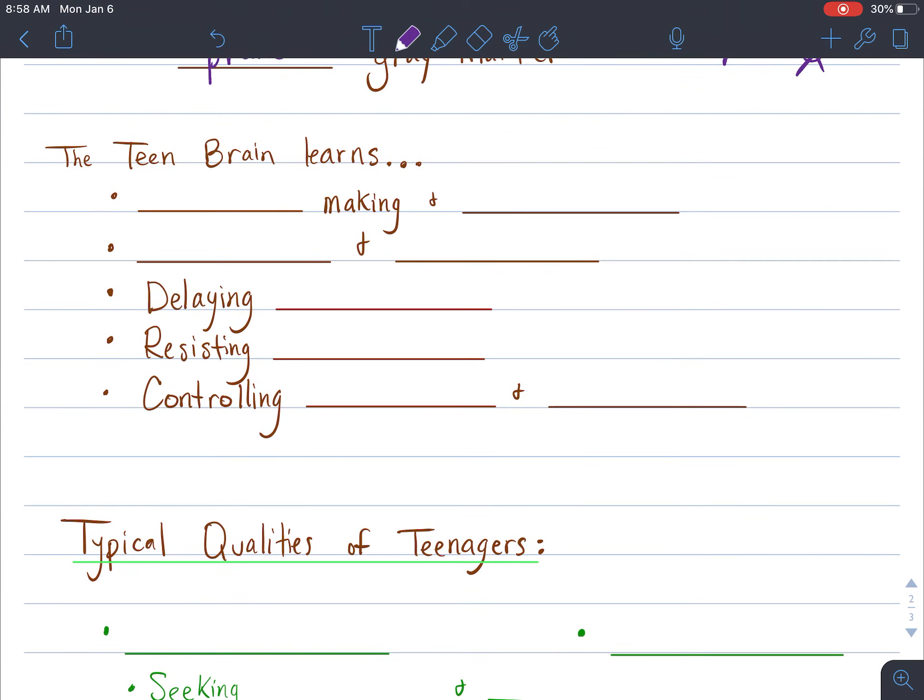So the teen brain learns many things. As you're a teenager, the things that you really are going to be practicing are things like decision-making and also prioritization. So knowing, you know, if you want to hang out with your friends and your room is dirty and your parents tell you that your room has to be clean before you hang out with your friends...